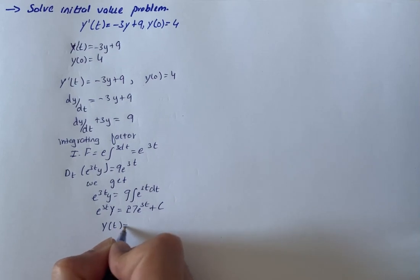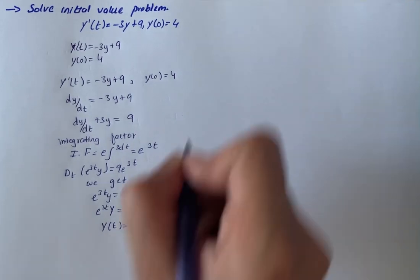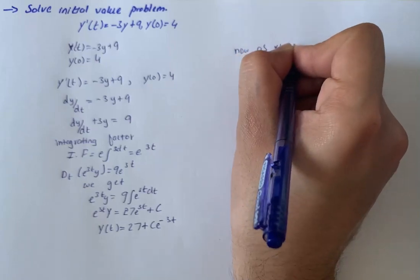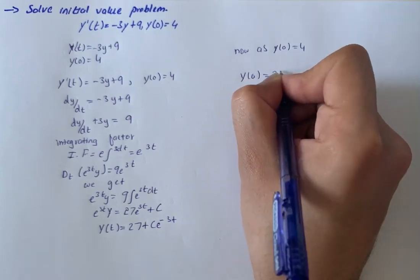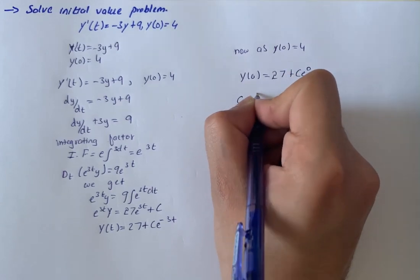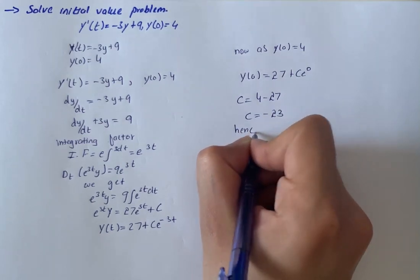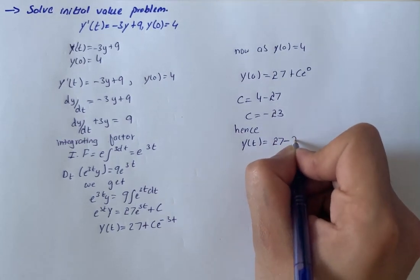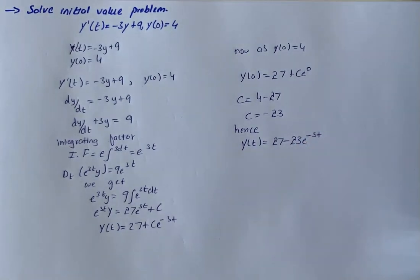Then we have y(t) equals 27 plus C e^(-3t). Now applying y(0) equals 4, we get 27 plus C e raised to power 0 equals 4, so C becomes 4 minus 27, and C equals minus 23. Hence, y(t) equals 27 minus 23 e raised to power minus 3t. That is our solution for the initial value problem.